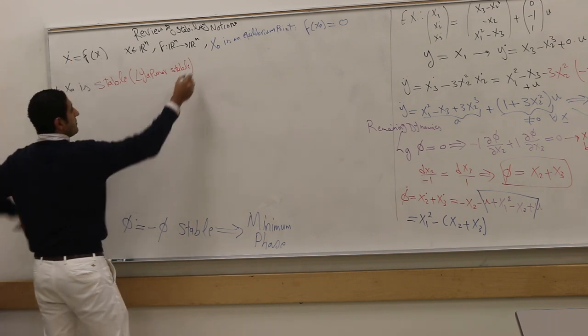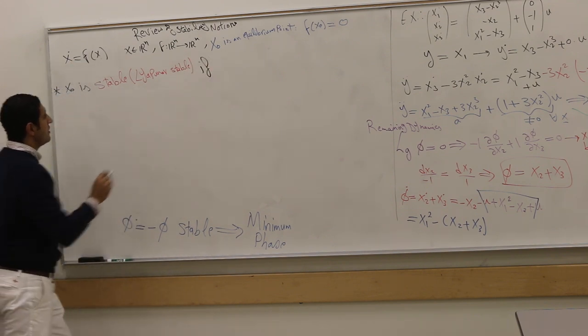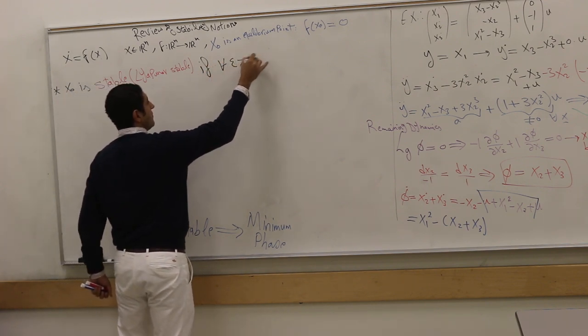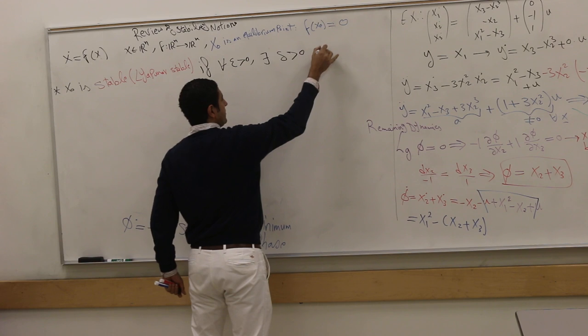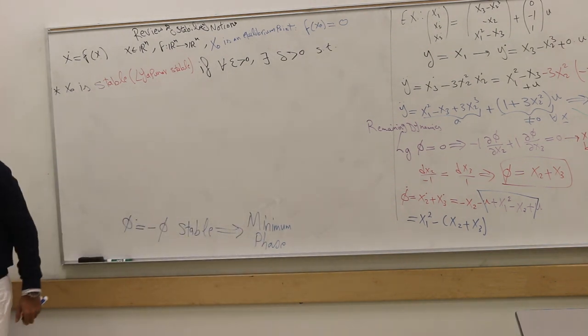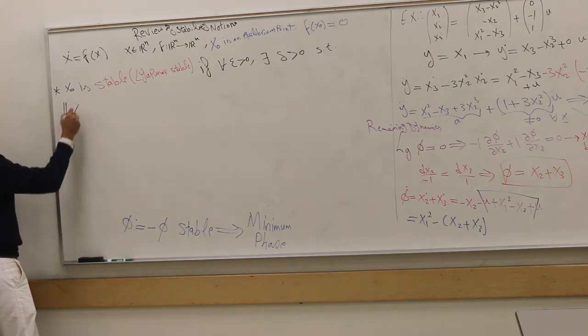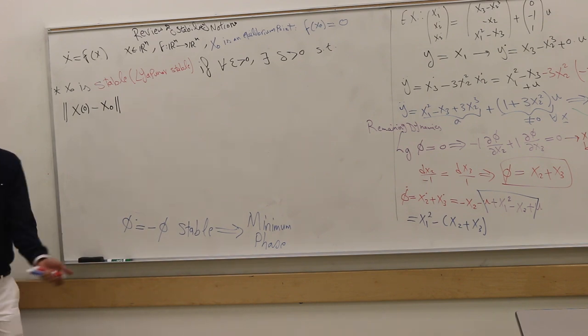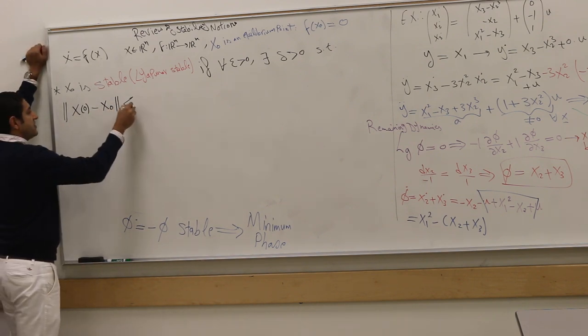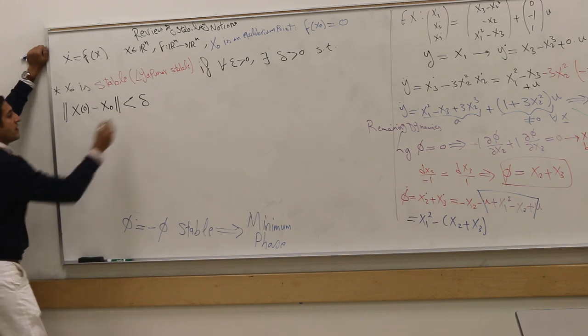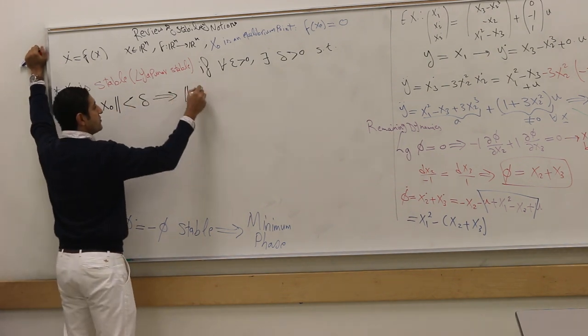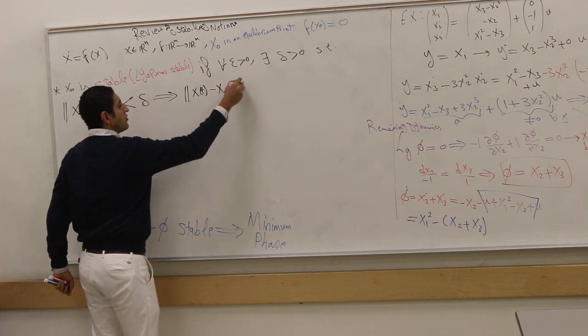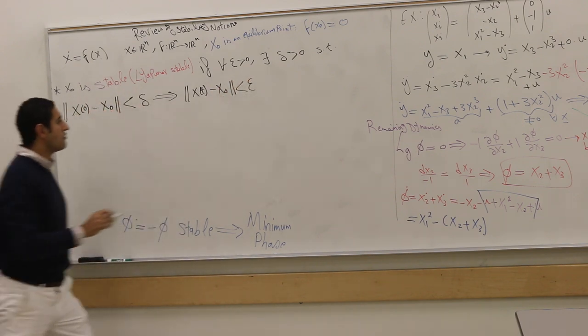For any equilibrium point, we have the following: x̄ is stable. This is the definition of stability of an equilibrium point. For every ε, there exists δ, such that if you start within δ, you stay within ε. So if you start here, my x(0), my initial condition, is a little bit away from the equilibrium. If I'm at the equilibrium, I will stay here forever. But if I disturb a little bit, but this is small enough, this implies that the response x(t) would be always close to the equilibrium for all time.